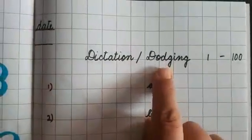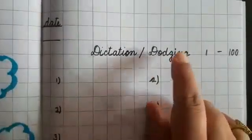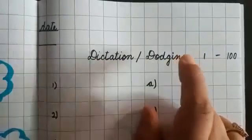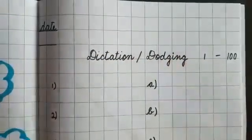Dictation come dodging. Dictation, whatever you are hearing and writing, that is your dictation. Same way dodging also, these are the random numbers. What ma'am or other one is going to say and you have to write down in your copy.